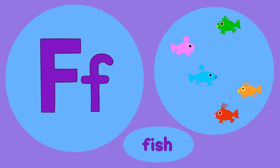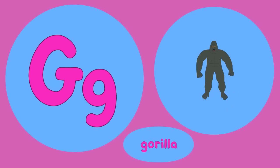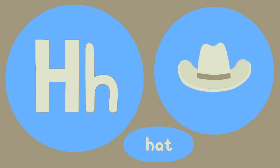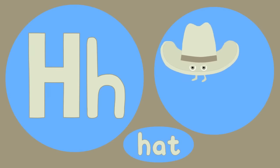E is for elephant, e-e-elephant. F is for fish, f-f-fish. G is for gorilla, g-g-gorilla. H is for hat, h-h-hat.